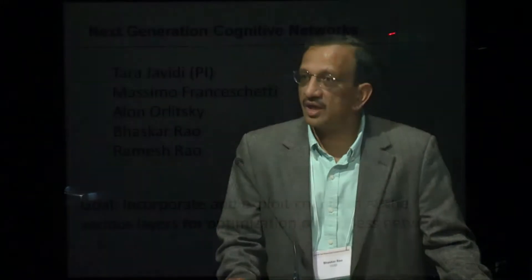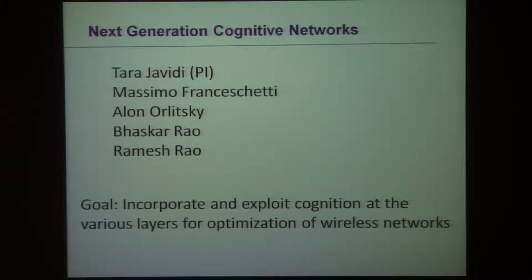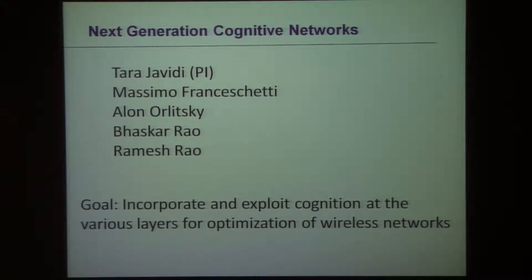Good afternoon. What I will be doing is reviewing the project called Next Generation Cognitive Networks. There are several faculty members involved — I won't read the list. The goal of this project is to really try to incorporate and exploit cognition at a more advanced level to optimize wireless networks. There's a lot of discussion, and this is quite a popular theme: how to incorporate more awareness into wireless networks. All of us have different views on how to do this.